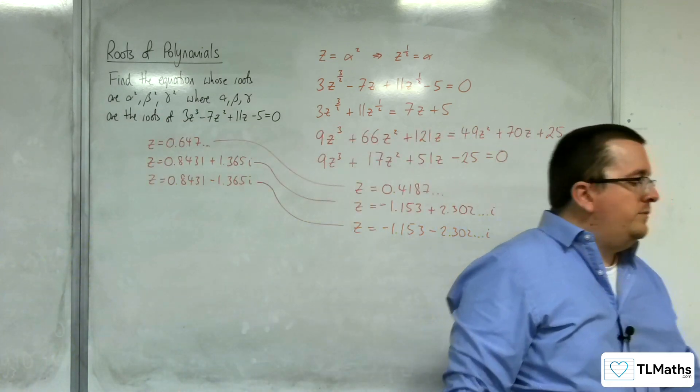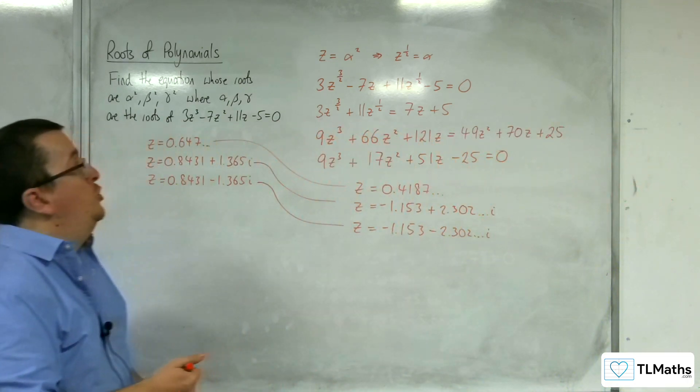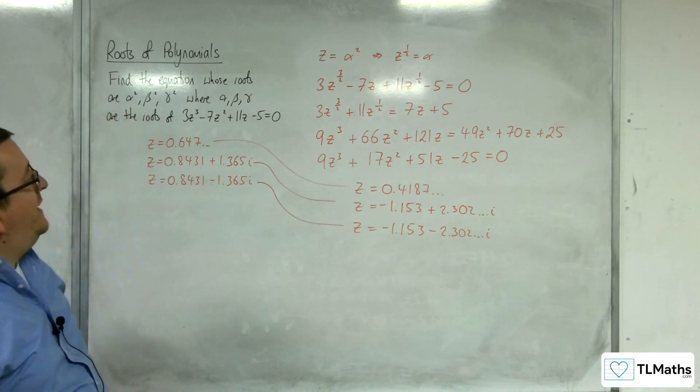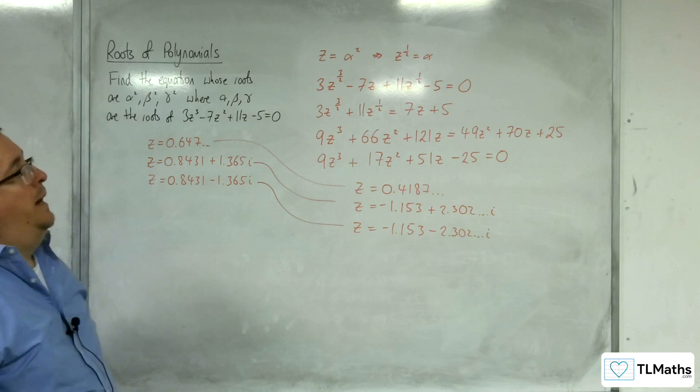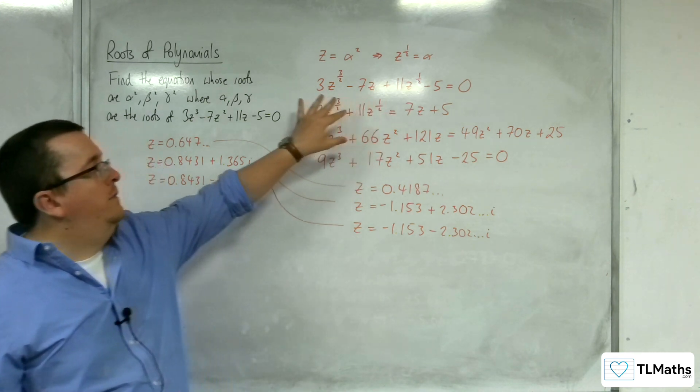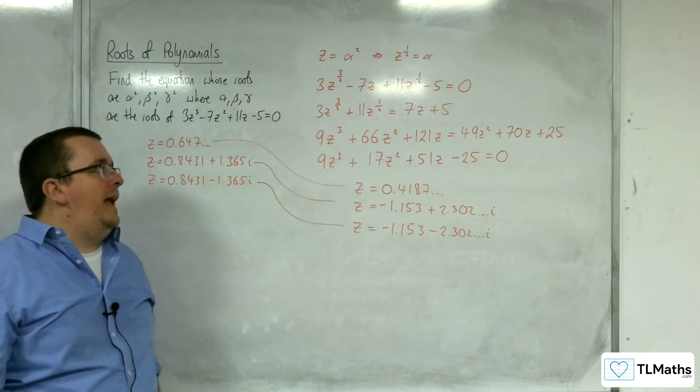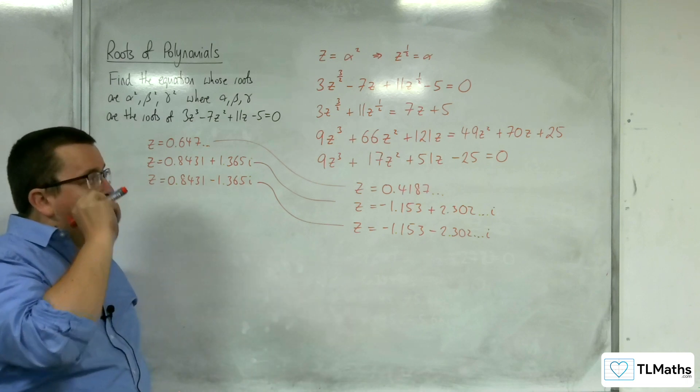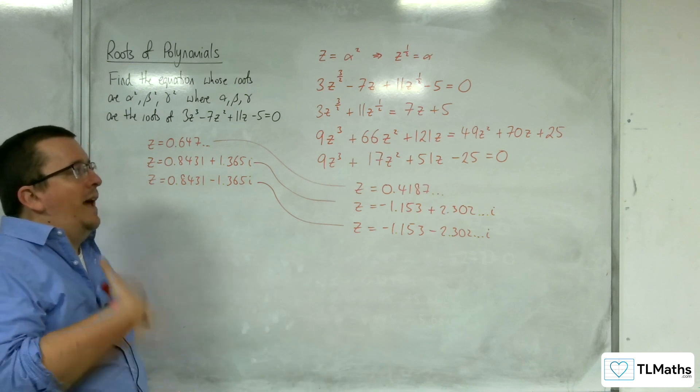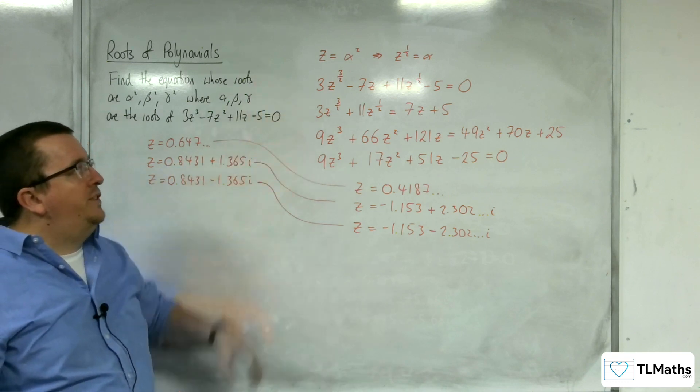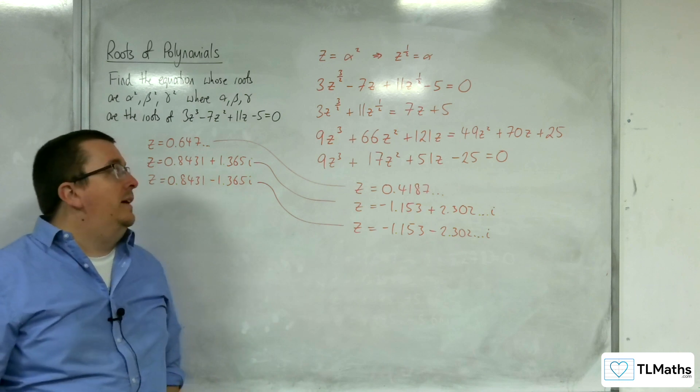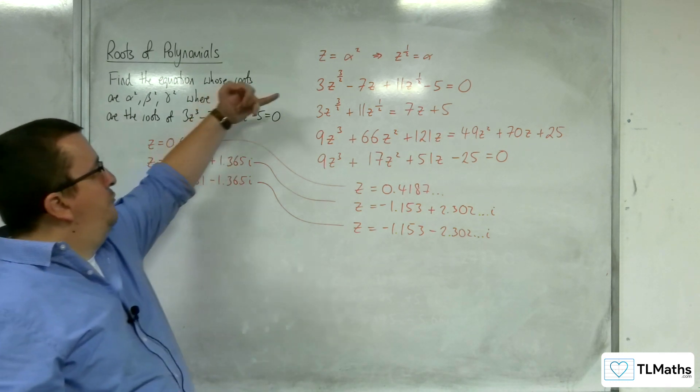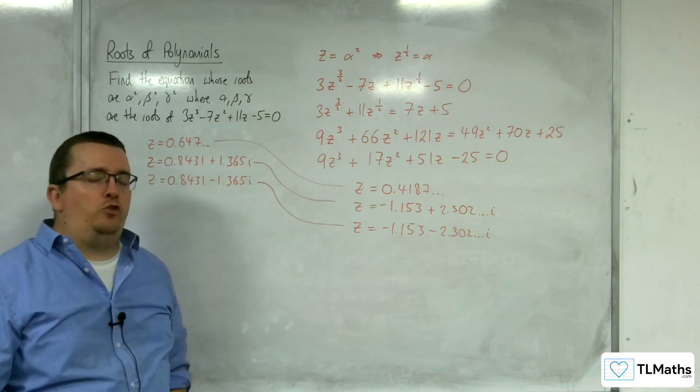This is how you can use the substitution method when we're looking for alpha squared, beta squared, gamma squared in this case. The equation you've got to then get back to a cubic is a little bit more fiddly. That's why you've got to put in that extra step of squaring in order to deal with the powers. In general, going from this to this might be quite tricky.